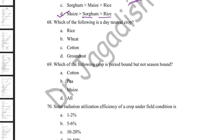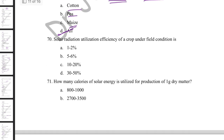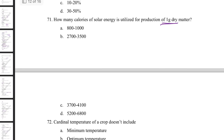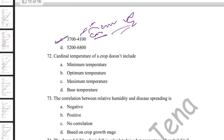Which is a day-neutral crop? Cotton is a day-neutral crop. Rice and groundnut are short-day crops; wheat is a long-day crop. Day-neutral crops — cotton, pea, maize — are period-bound but not season-bound; they can be grown in any season. Solar radiation use efficiency of a field crop is 1–2%. For one gram of dry matter, 3700–4100 calories of solar energy are used — this is the conversion efficiency.